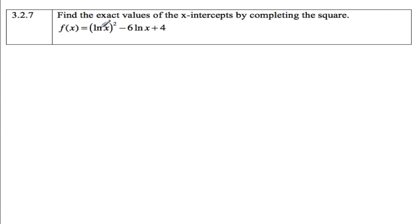Hi, this is 3.2.7. Find the exact values of the x-intercepts by completing the square of this function. Now this is a little bit different. This is not a typical quadratic. We have ln(x) instead of x.